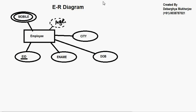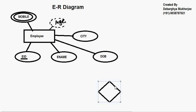Now the next thing is called the relationship. Any relationship is defined by a diamond shape. So this is one relationship.